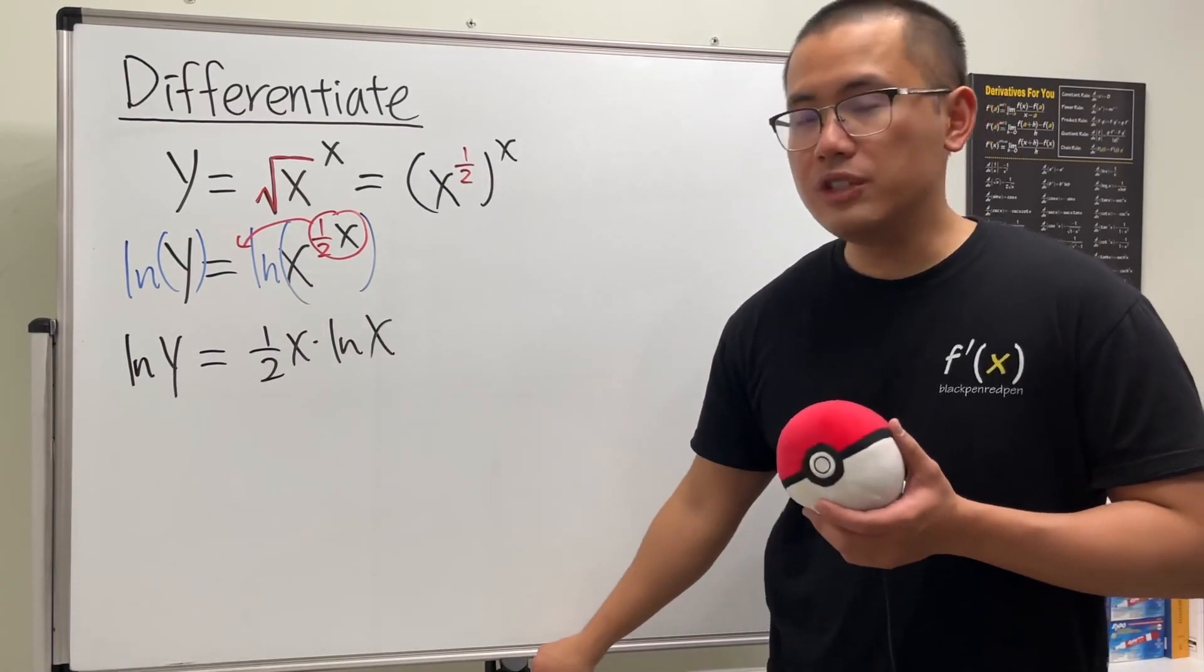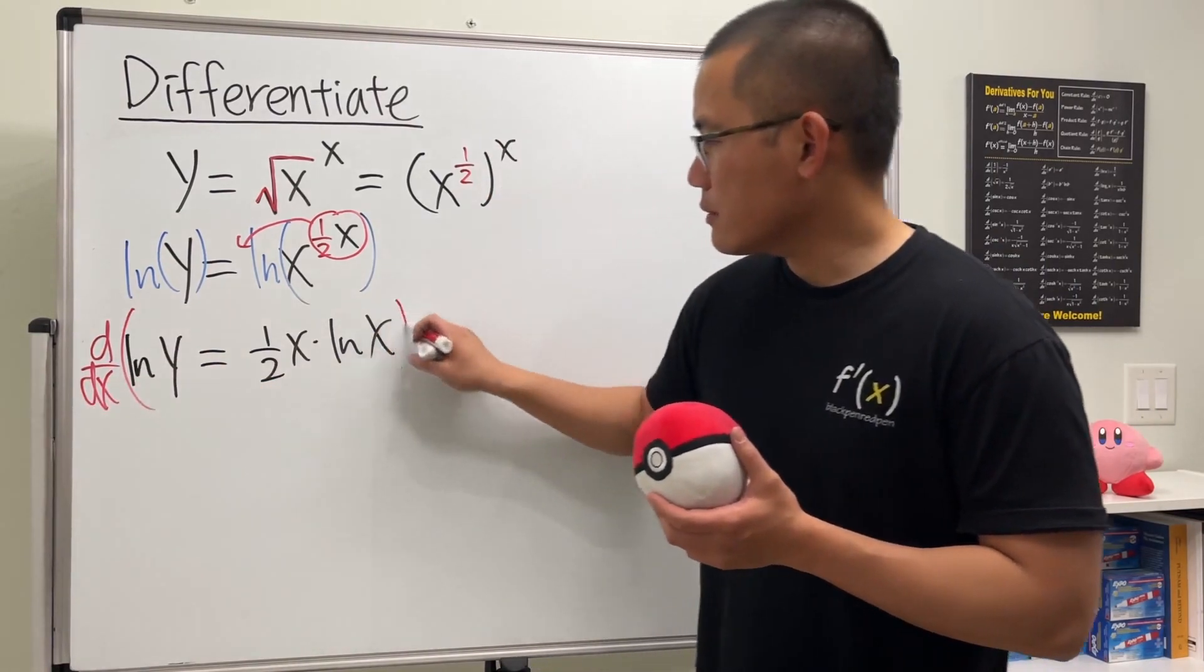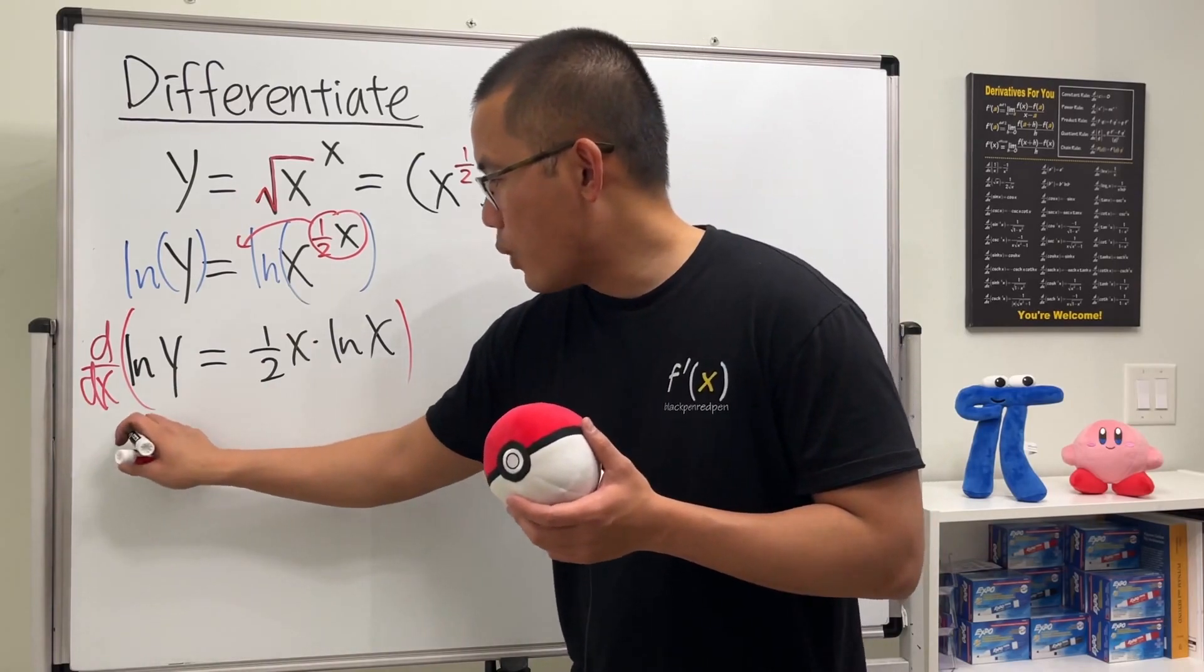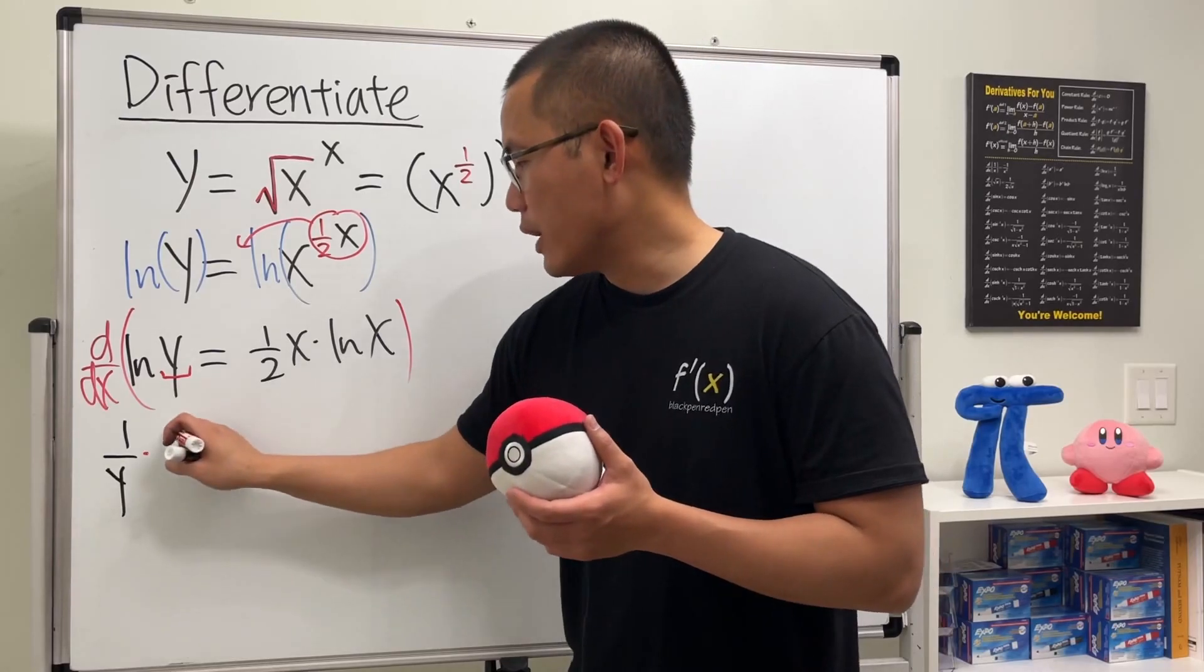Then we can use implicit differentiation. So let's go ahead and do that, d dx here. The derivative of ln y is one over y times the derivative of the inside, that's the dy dx.